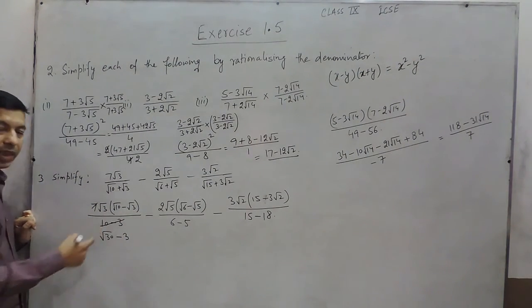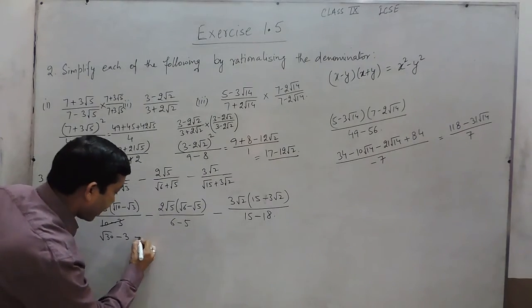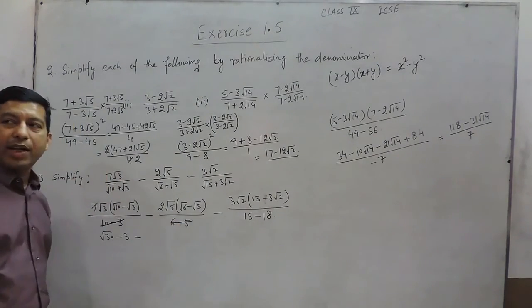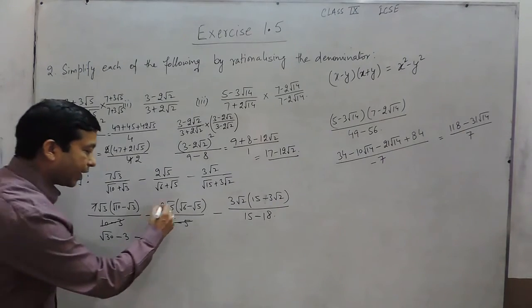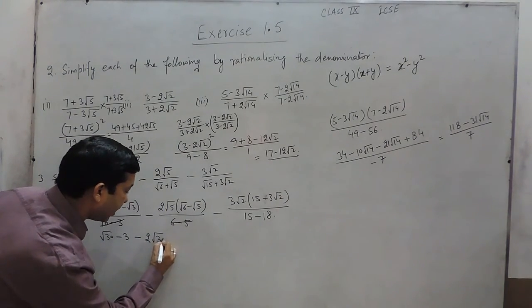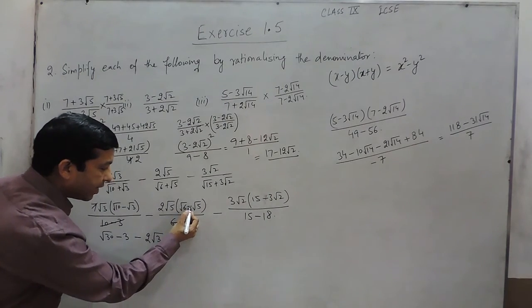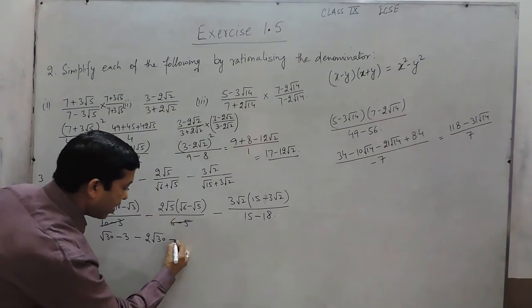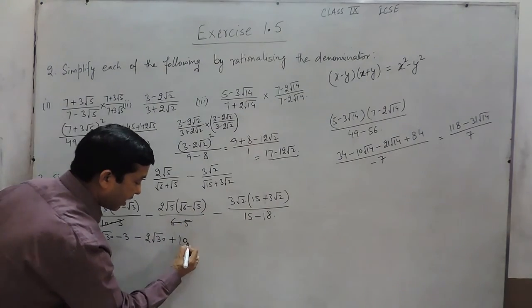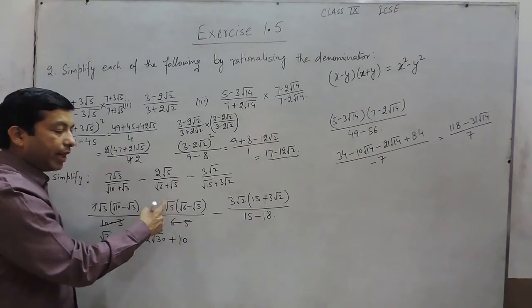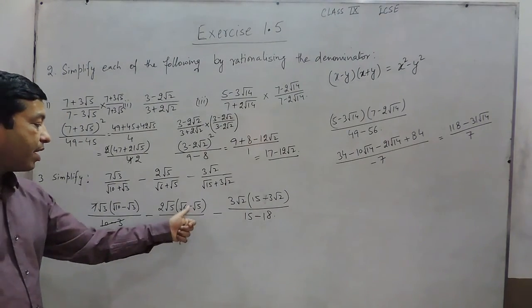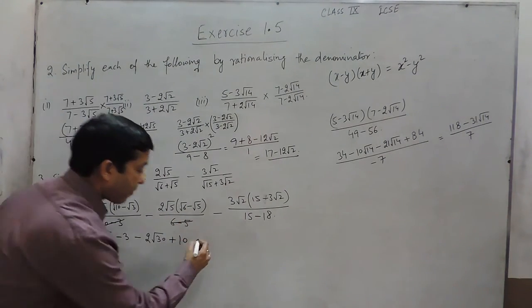Root 3 multiplied by root 3 equals 3. For the next part, the denominator is already 1 since 6 minus 5 is 1, so we can directly multiply. It becomes 2 root 13. The negative sign multiplied by a negative becomes positive, and 2 root 5 multiplied by root 5 is 10, because root 5 times root 5 is 5, and 5 multiplied by 2 is 10.